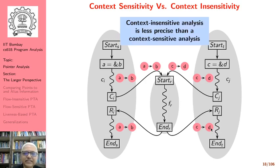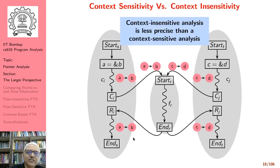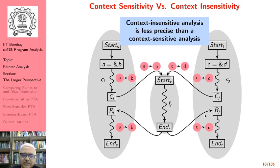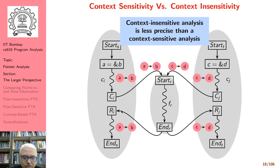It is easy to see that context-insensitive analysis is less precise than context-sensitive analysis. In context-insensitive analysis, we are unable to distinguish between contexts, so both pairs — 'A points to B' and 'C points to D' — reach both callers S and T.